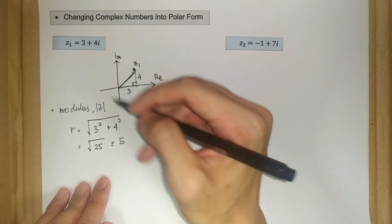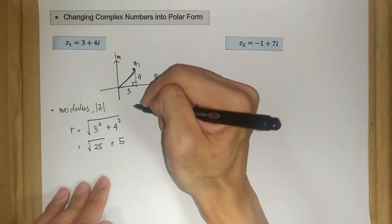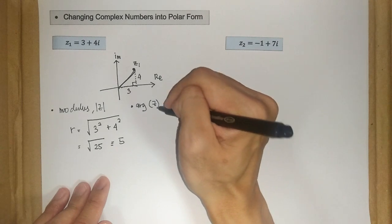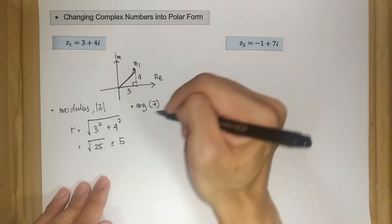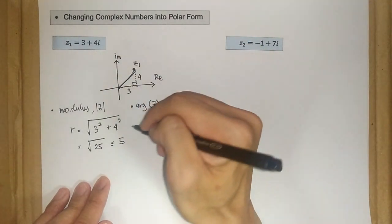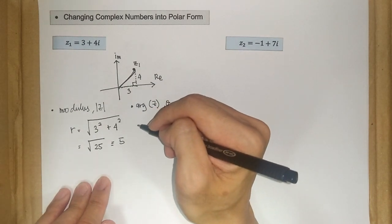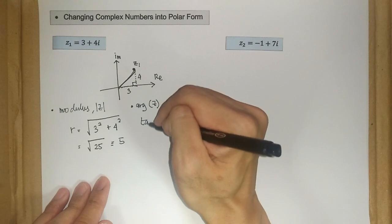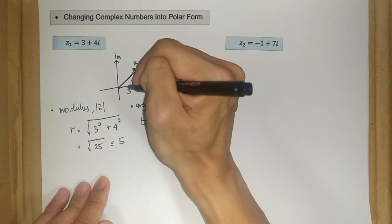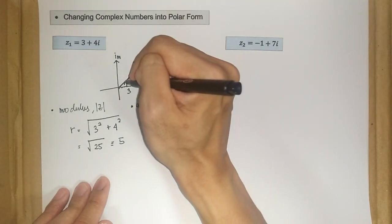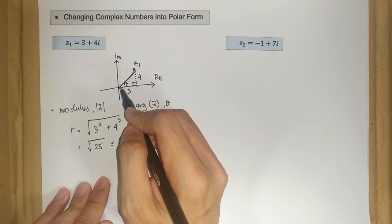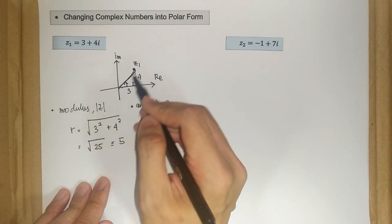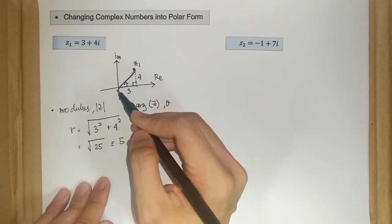And next is the argument. So the argument of z is also known as theta. So we just apply basic trigonometric ratio. So we have tan theta. Oh, by the way, theta is the angle measured from positive real axis up to the line of z from the origin.